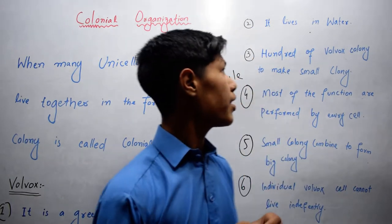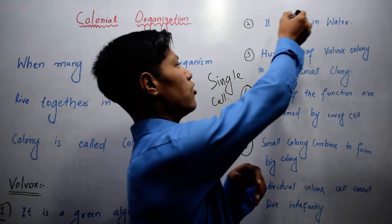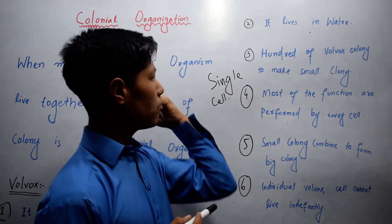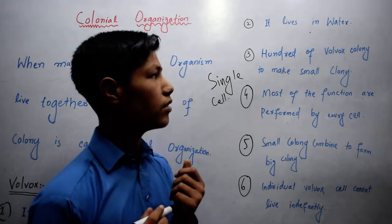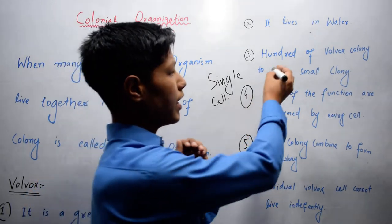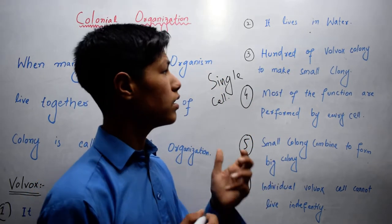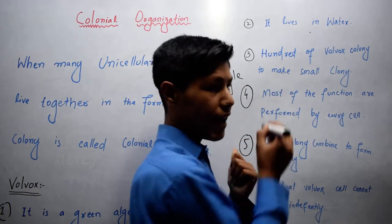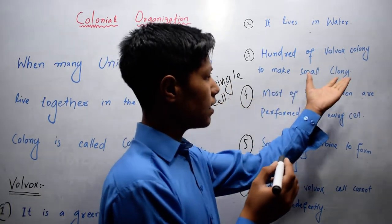Now, second, it lives in water. Volvox live in water because they like water. Third, when hundreds of Volvox combine, they form a small colony.